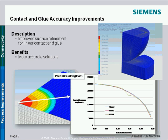Also for version 7, we enhanced contact and glue by now allowing users to define parameters — contact parameters, glue parameters — locally for different pairs of contact and glue. Before, we could only have global parameters that applied to contact and glue everywhere in the model. In some cases, you want to apply different settings to specific contact pairs.